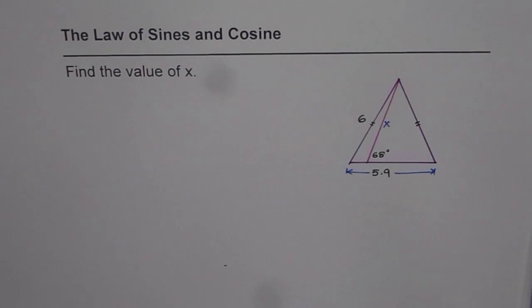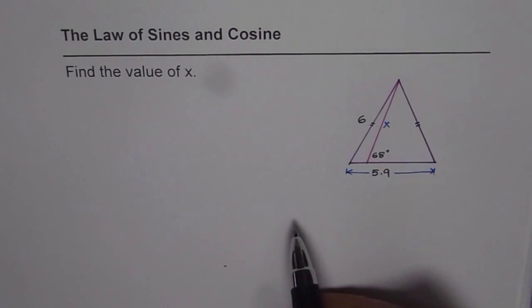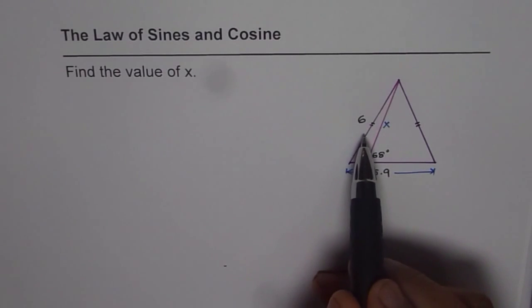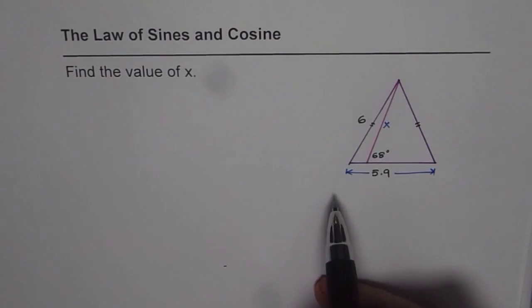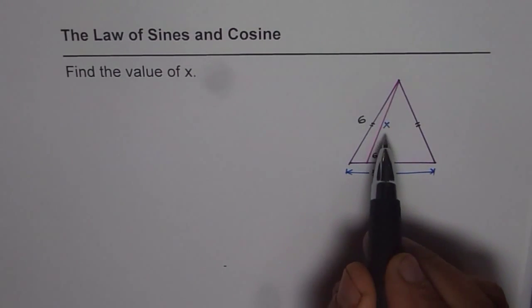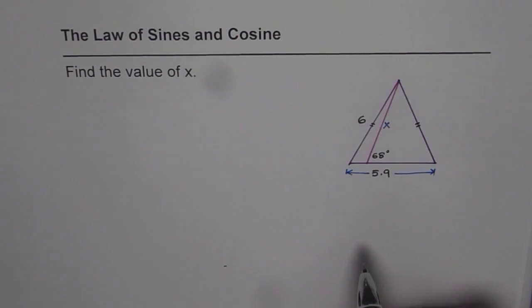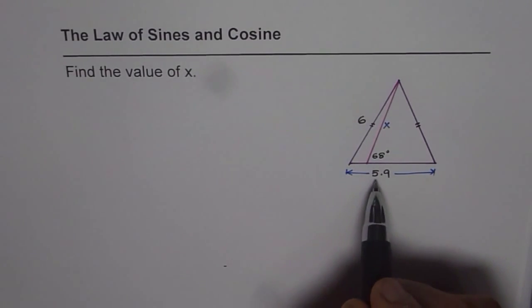Find the value of x in the given triangle. Here we have an isosceles triangle; you can see these two sides are equal. We are given one of these equal sides as x. The interior angle for a side is 68 degrees and we need to find the length x. The base of the triangle is 5.9.